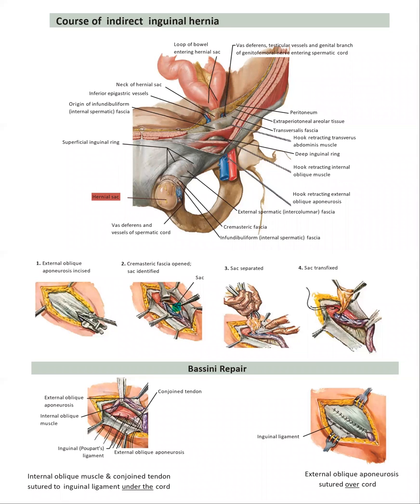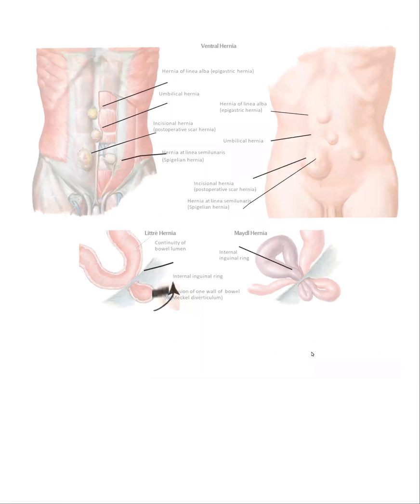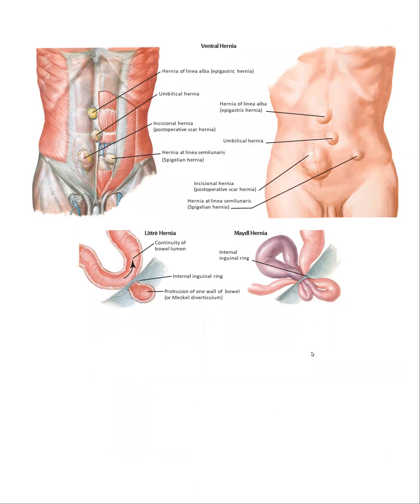Hello, we are going to demonstrate indirect inguinal hernia, which is a type of ventral abdominal hernia. We have umbilical, paraumbilical, incisional hernia at linea semilunaris, which is called Spigelian hernia, and Littre's hernia, and Maydl's hernia.